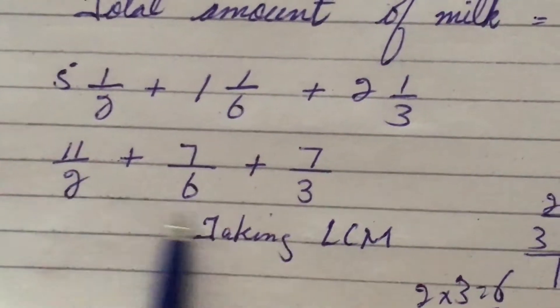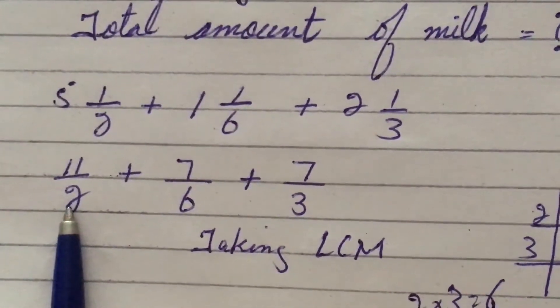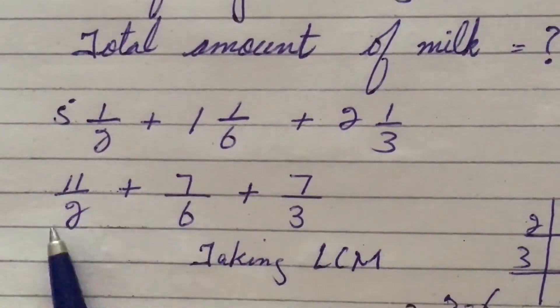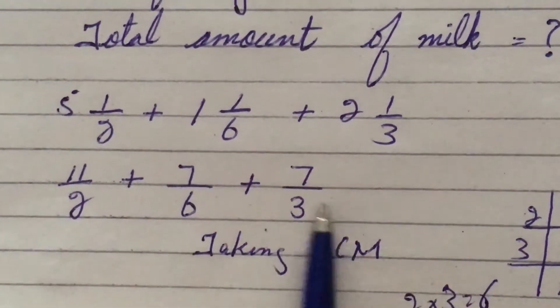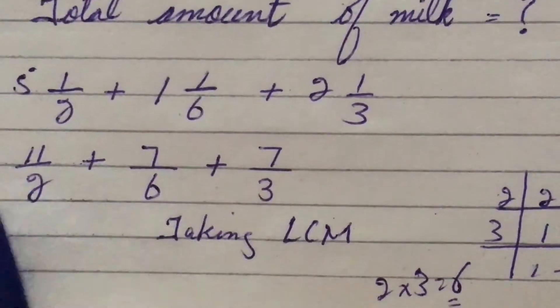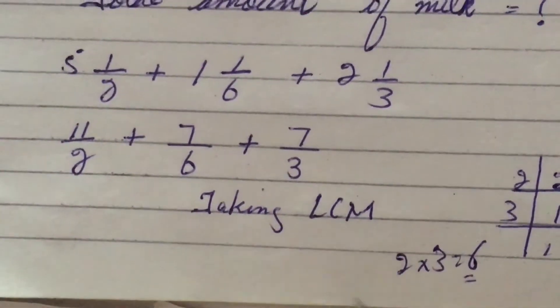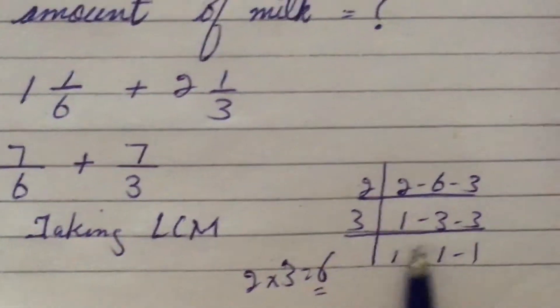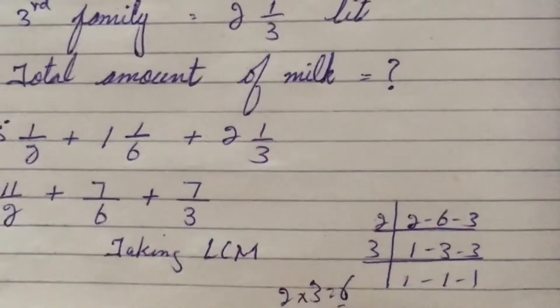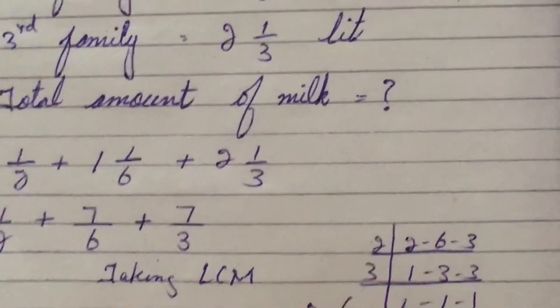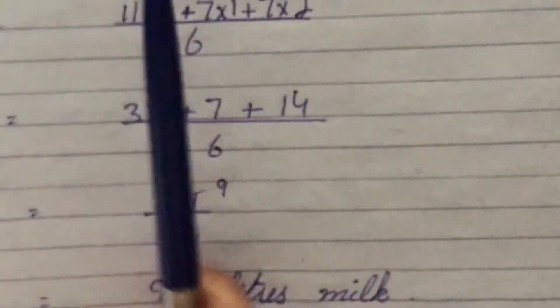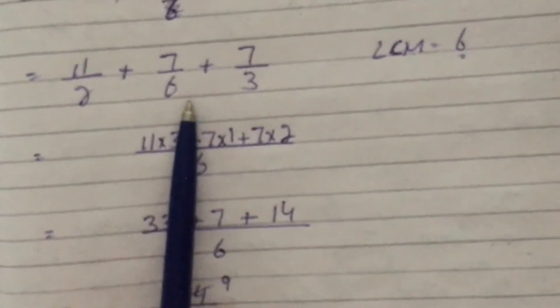Now as you can see we have different denominators here, so we will find the LCM of these three denominators. So taking the LCM, you already know how we are going to find out the LCM. When we find LCM of 2, 6, and 3, we'll get 6. So 6 is the LCM of these numbers.